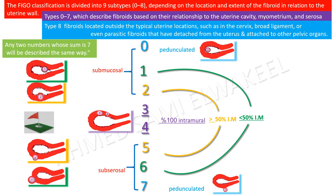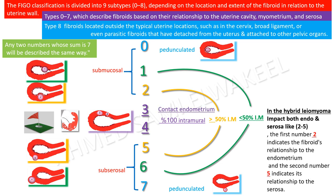Subtype four is located in the center of the myometrium, while subtype three is 100% intramural and can contact the endometrium. In hybrid leiomyoma, the fibroid impacts both the endometrium and serosa, like subtype 2-5, where the first number indicates the fibroid's relationship to the endometrium and the second number indicates its relationship to the serosa.